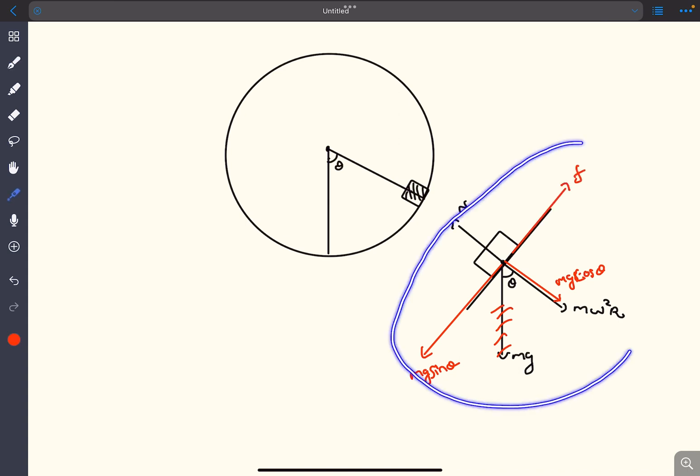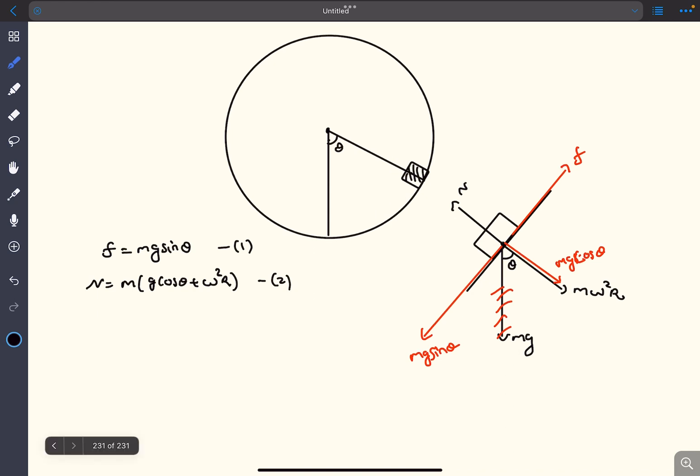This is the free body diagram of the block at a general theta, and clearly the block has to be at rest. F must equal mg sin theta and normal must equal this particular value. The condition required in the question was that the block should not slip, which means F must be less than or equal to mu times the normal reaction.